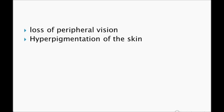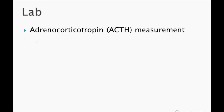Hyperpigmentation of the skin is very important. You see hyperpigmentation because of increased ACTH, and it is not limited to sun-exposed areas — remember that. For lab findings, ACTH measurement is very important. There are a number of hormones you can test because of hypopituitarism: for diabetes insipidus, test urine osmolality and serum osmolality; for hypothyroidism, test TSH, T4, and T3. There are many tests you can do, but the most important is the ACTH measurement.